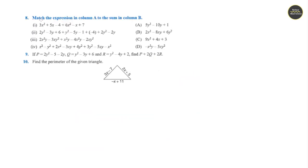Section 8, Match the Following. Question 1: Adding like terms 3x square and 6x square gives 9x square. There is only one option having 9x square, so question 1 matches with option c.